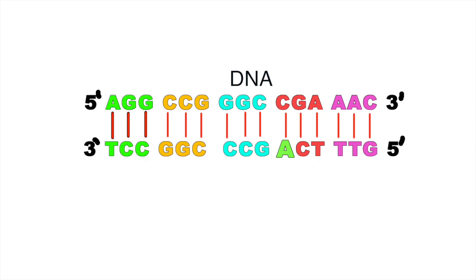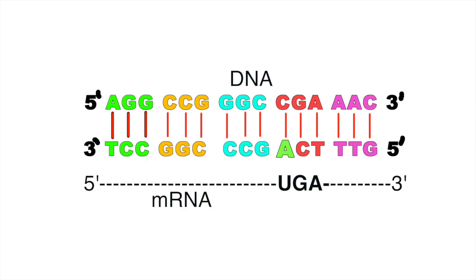This change makes the codon ACT. The ACT codon will produce the UGA codon in mRNA, and UGA is a stop codon — it codes for nothing. So protein synthesis will stop at that point, giving us an altered form of protein, which leads to the formation of an oncogene. An example is the point mutation found in the RAS gene, which causes cancer.